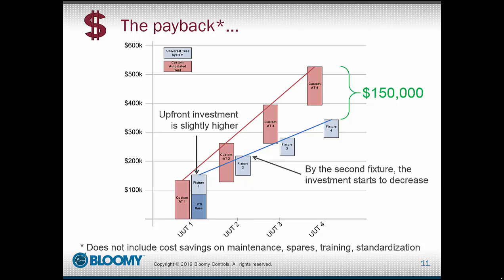In the event that a single base is not enough to provide the throughput required for a product line, additional bases and fixtures can be developed, allowing you to double your testing of a particular product in times of high demand.